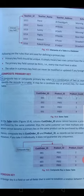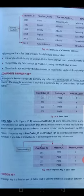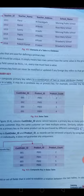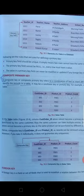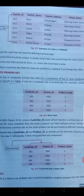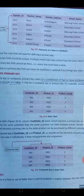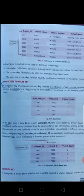The second is Composite Primary Key. A composite key, or composite primary key, refers to a combination of two or more attributes that together uniquely identify data in a table. If we have two unique fields, it becomes a composite primary key. For example, in a table where Customer ID and Product ID are both unique, together they form a composite primary key.